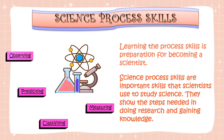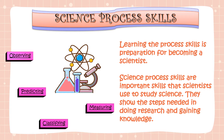Learning the process skills is preparation for becoming a scientist. Science process skills are important skills that scientists use to study science. They show the steps needed in doing research and gaining knowledge. Some of them include observing, predicting, classifying, and measuring.